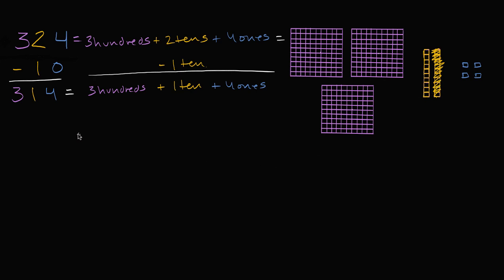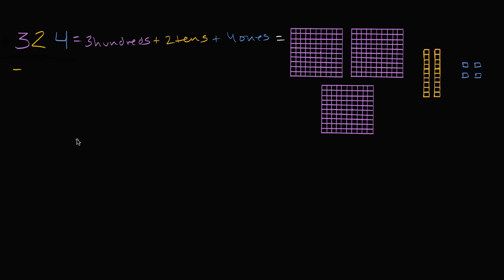Now let's subtract a hundred from three hundred and twenty-four instead of a ten. So let's now subtract a hundred — that's one hundred, zero tens and zero ones. Let's subtract that now.